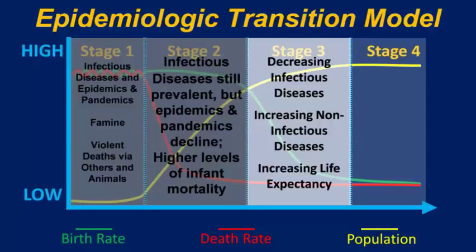Now in stage three of the epidemiologic transition model — which relates to the demographic transition model — we see decreasing infectious diseases as causes of death and more non-infectious diseases. A lot of this relates to improvements in life expectancy and a continued decrease in the crude death rate, meaning people are living longer and more likely to move to urban areas. Air pollution may become more of a burden, and people with extra income might spend it on alcohol and cigarettes, making lung cancer and cirrhosis of the liver more likely ailments at this stage.